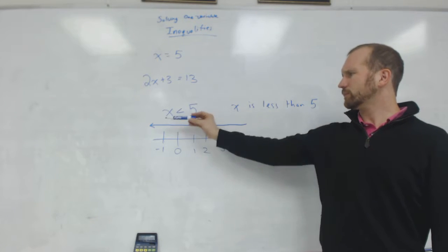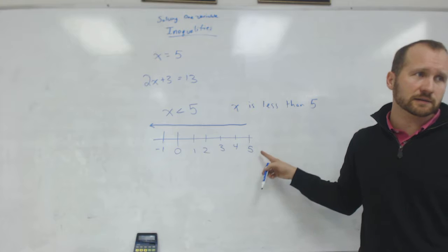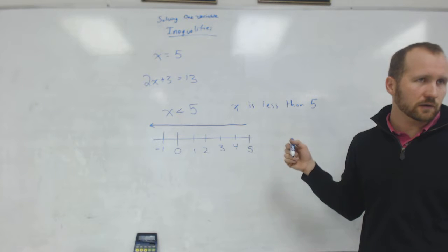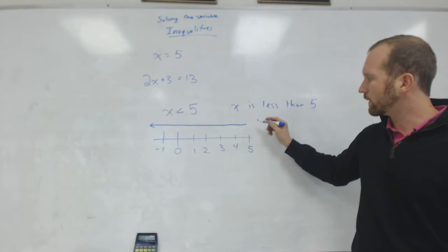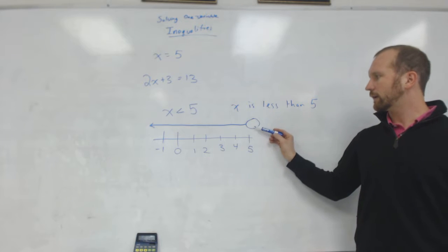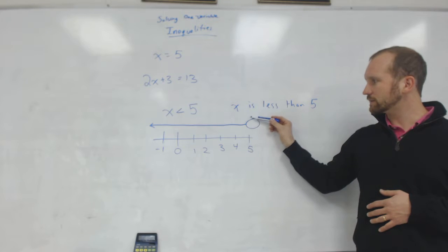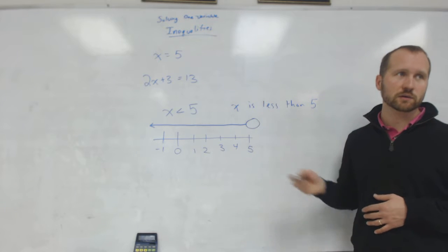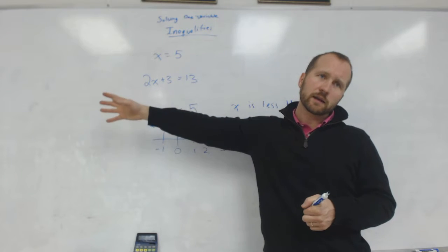We show it by drawing an arrow on the number line. Could X be 5 if X is less than 5? Is 5 less than 5? No. So to show that X couldn't actually be 5, on our number line we use a hollow circle. It shows that this graph starts at 5 but does not include 5 — that number is not included — and it goes all the way down through all the negative numbers.